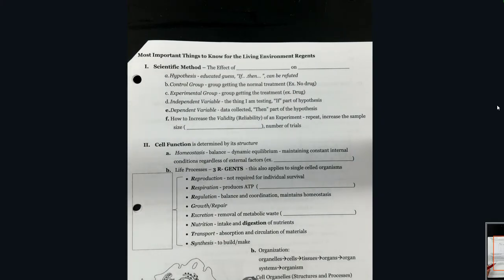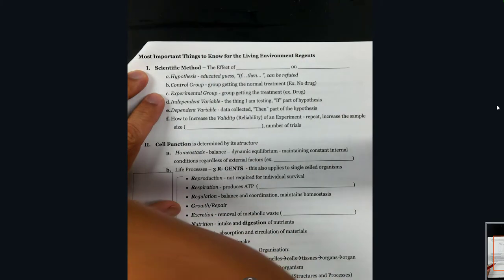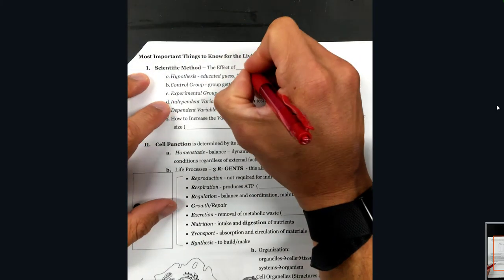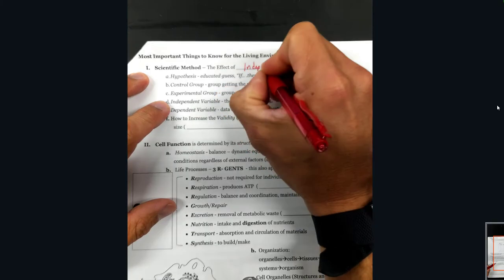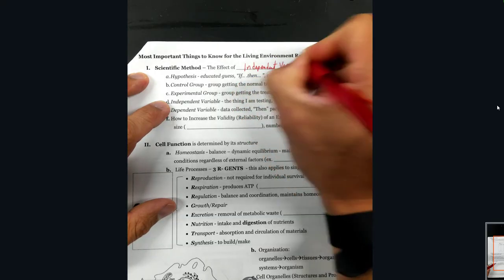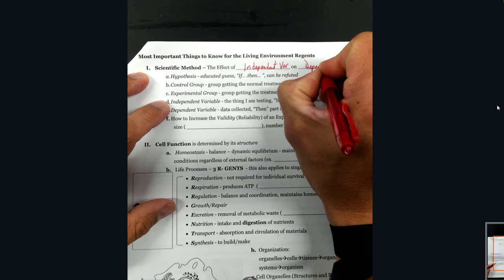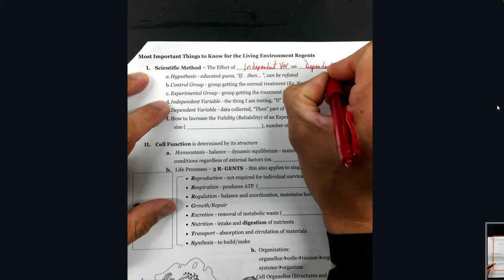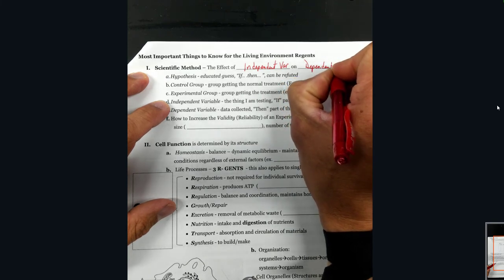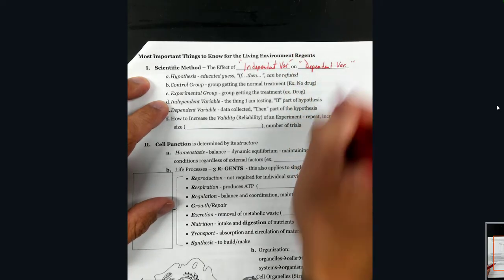Our scientific method has different parts to it that we have to keep in mind. When we have our title, we want to make sure we include our independent variable and our dependent variable, whatever they may be. We put those into those slots to make up our title.